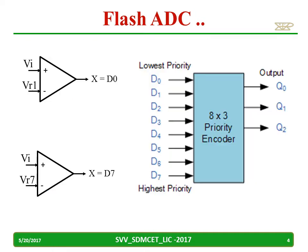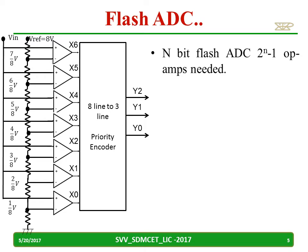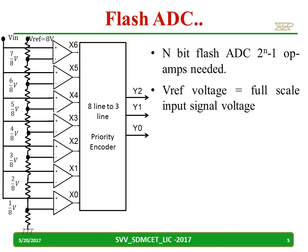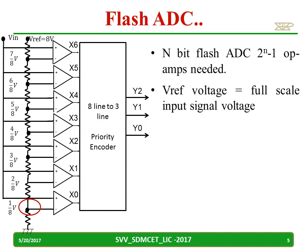In the Flash ADC, we cascade comparators with an 8-by-3 priority encoder. An N-bit Flash ADC needs 2 raised to N minus 1 op-amps. The reference voltage gives the full scale input signal voltage. For example, if V reference is 8 volts, the tapped voltages become 7/8 V, 6/8 V, down to 1/8 V.